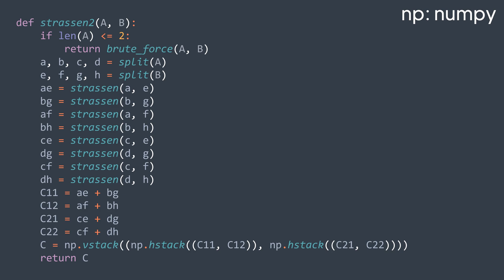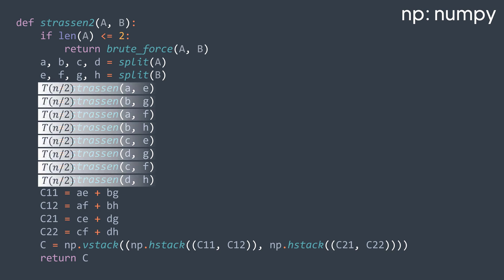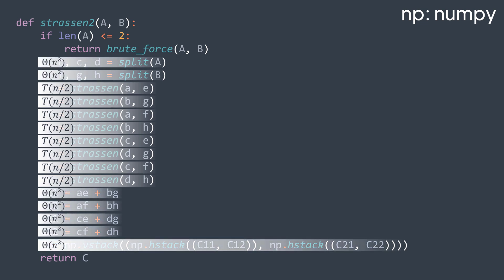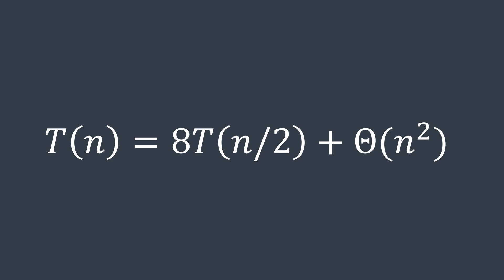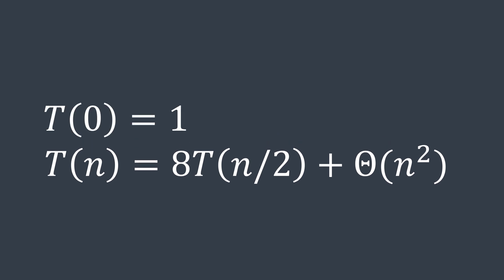For the time complexity, we're calling the function eight times with matrices of size n/2, we have 8 times T(n/2). And we also have stuff in theta of n squared like splitting the matrices, calculating the parts of C, and combining them. We got T(n) is equal to 8 times T(n/2) plus theta of n squared. And T(0) is theta of one because multiplying matrices of size two is done in constant time.